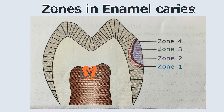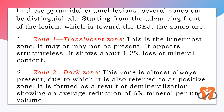Now the zones of enamel caries. The advancing front of the lesion has different distinguishable zones. Zone 1 is the translucent zone — the innermost zone, which may or may not be present. It appears structureless and shows approximately 1.2% loss of mineral content, so very little mineral loss.